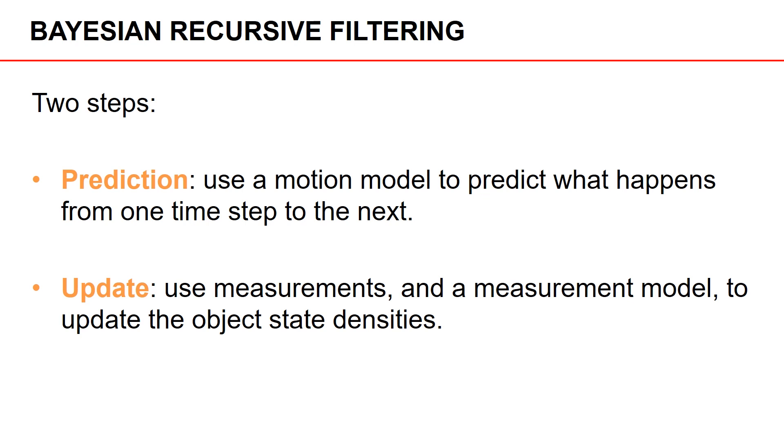This means we use the measurement information to update our knowledge about the object states. These two steps are iterated: we do a prediction, then we update, followed by a prediction, an update, and so on. Filtering for multiple object tracking is recursive—we repeat the same steps.